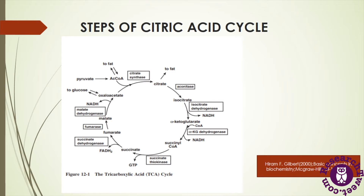This is the overall diagrammatic representation of the citric acid cycle. With the help of this graphical presentation we will discuss all the steps, intermediates, and enzymes. First, acetyl coenzyme A takes part as a substrate and with the help of enzyme citrate synthase converts into citrate. In the second step, aconitase enzyme catalyzes the isomerization of citrate into isocitrate. Then isocitrate is converted into alpha-ketoglutarate by isocitrate dehydrogenase, releasing one molecule of NADH.